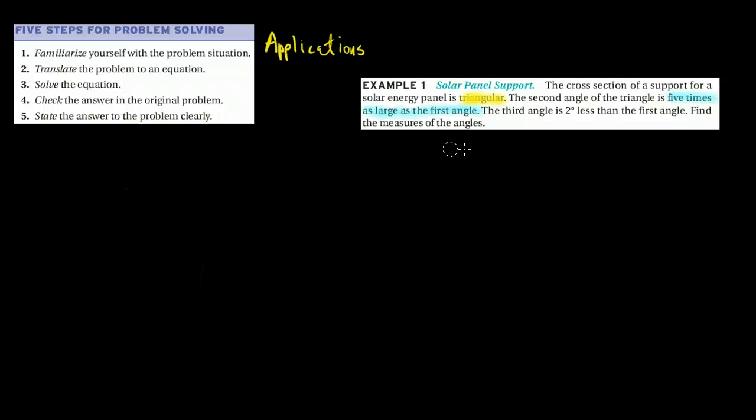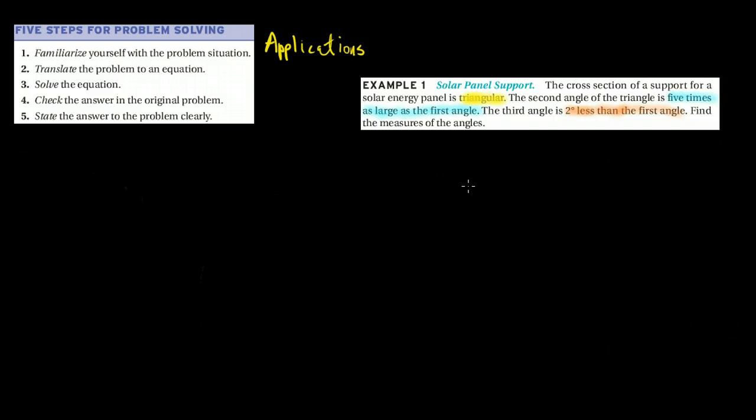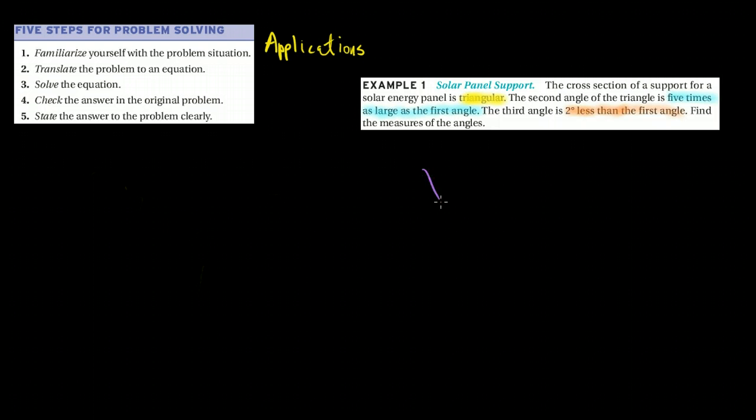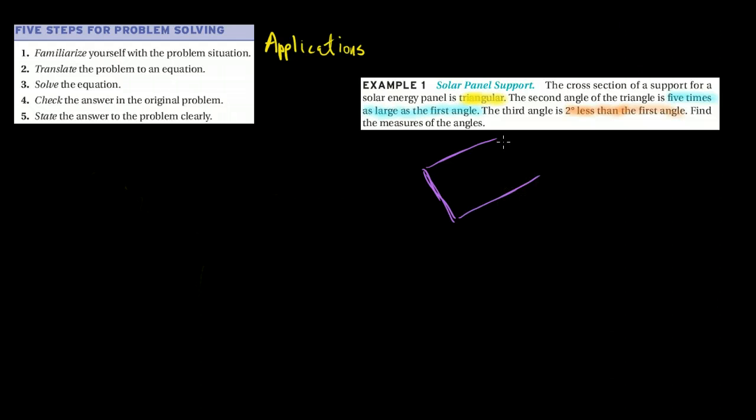And that the third angle is two less than the first angle. And it says, find the measure of the angles. So now that I'm somewhat familiar with what's going on, what I do is I like to draw a picture. So here is a picture. Here is my solar panel. And solar panels are kind of angled so that they can catch the sun at an angle and get as much surface as they can.